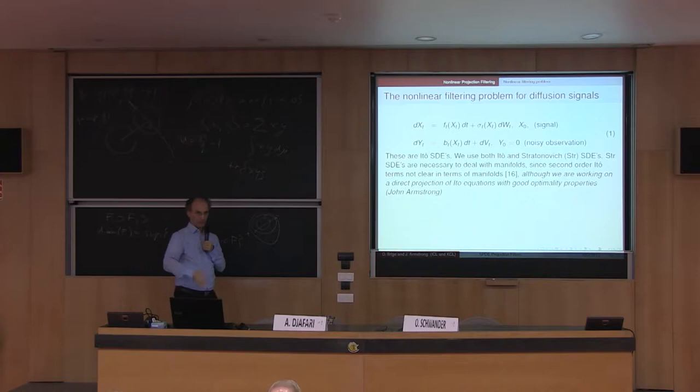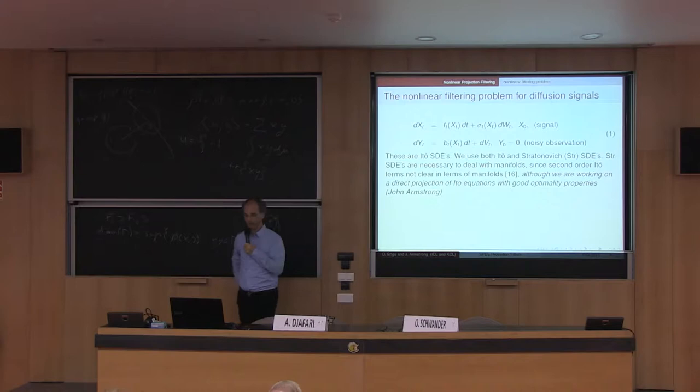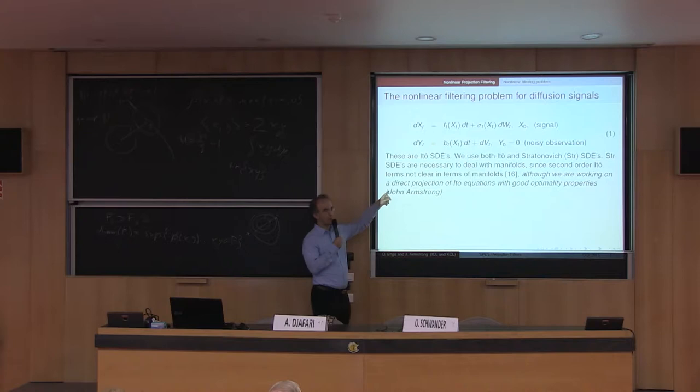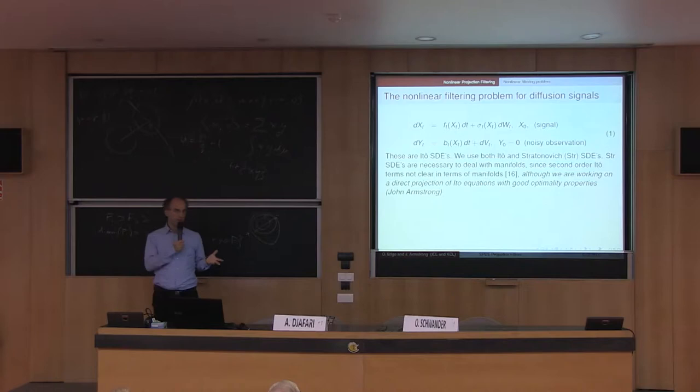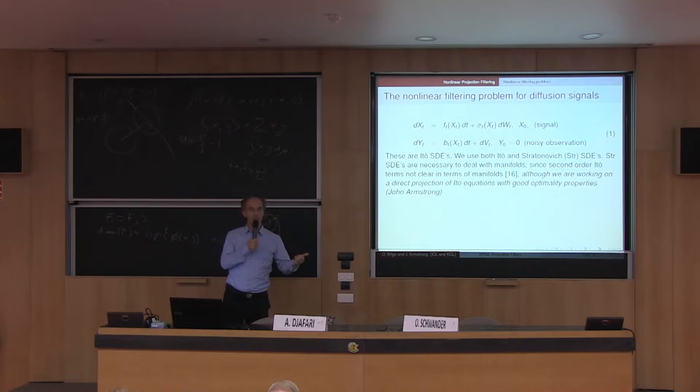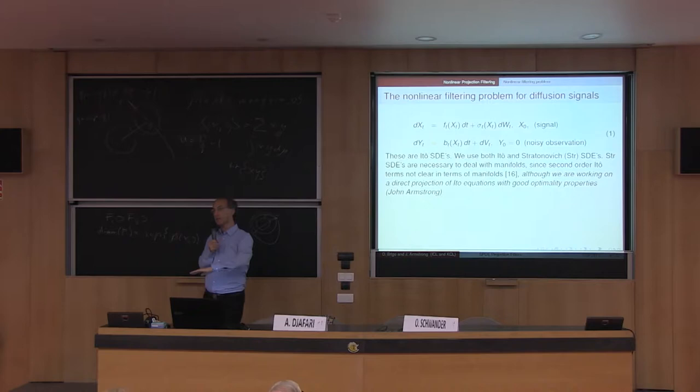It's a Bayesian inference problem, but also a sort of inverse problem. The stochastic calculus typically used is Itô calculus, because it has better probabilistic properties. However, to deal with differential geometry, you need the chain rule to work if you want stochastic differential equations that are covariant with respect to change of coordinates. That's why we use the Stratonovich stochastic calculus for deriving the filter.